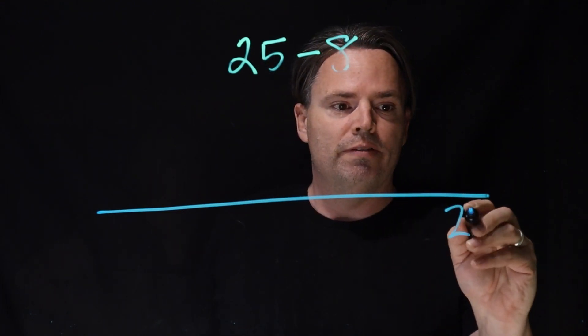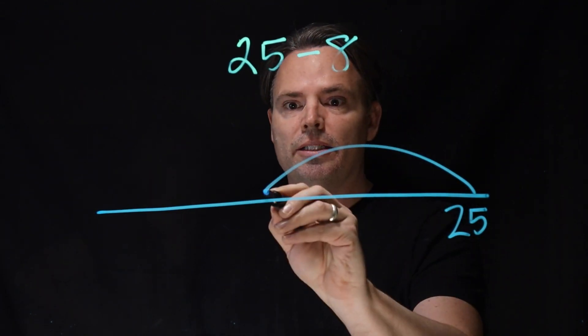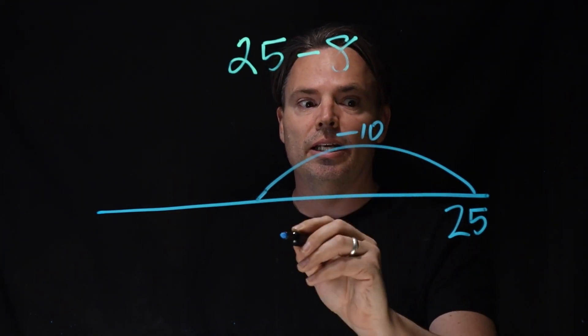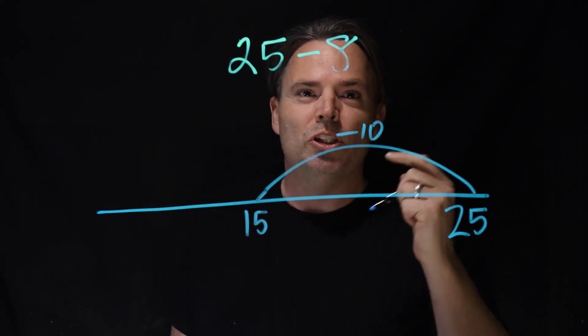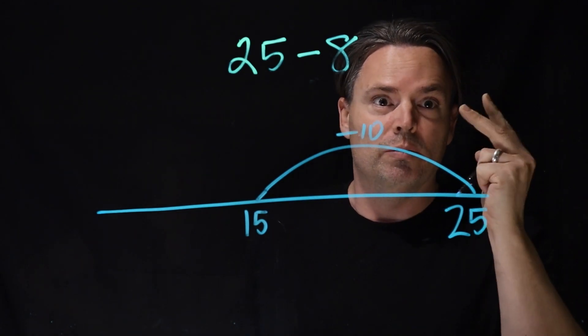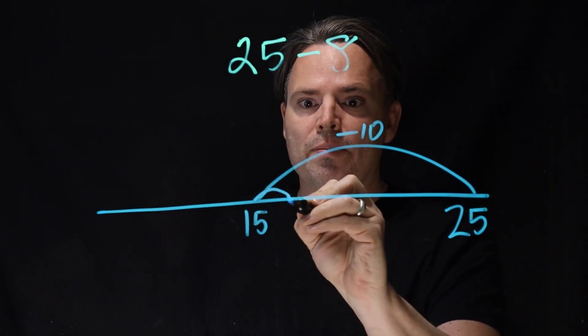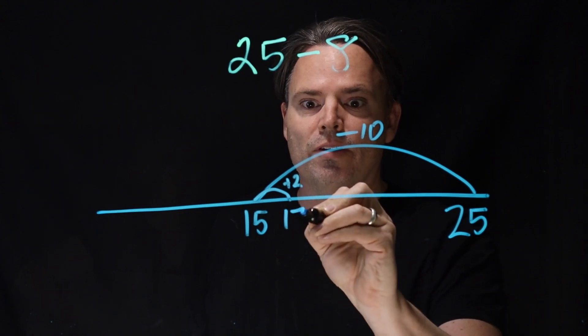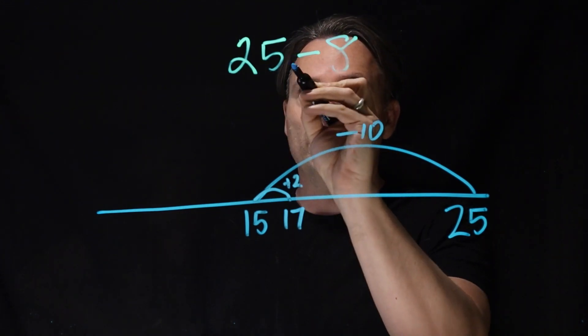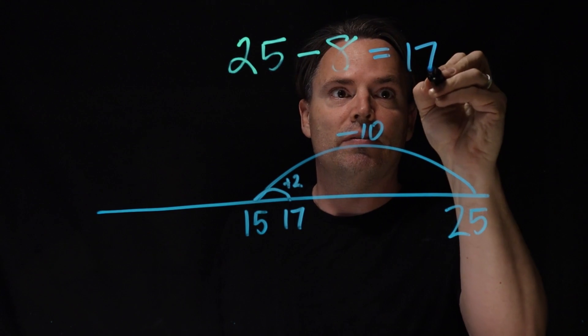She was at 25, and she minused 10 to get to 15. But she knew that was too much. So she added back 2, which gave her 17. So 25 minus 8 equals 17.